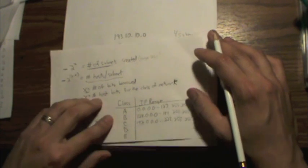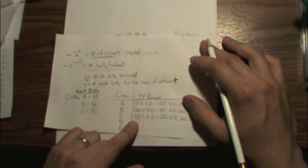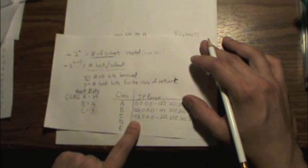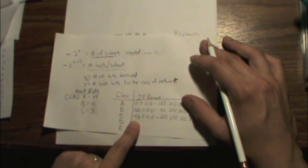If we look at our IP range and our classes, 193 falls under the class C IP address range. And if we go over to this little table here, C has 8 host bits. So y equals 8.